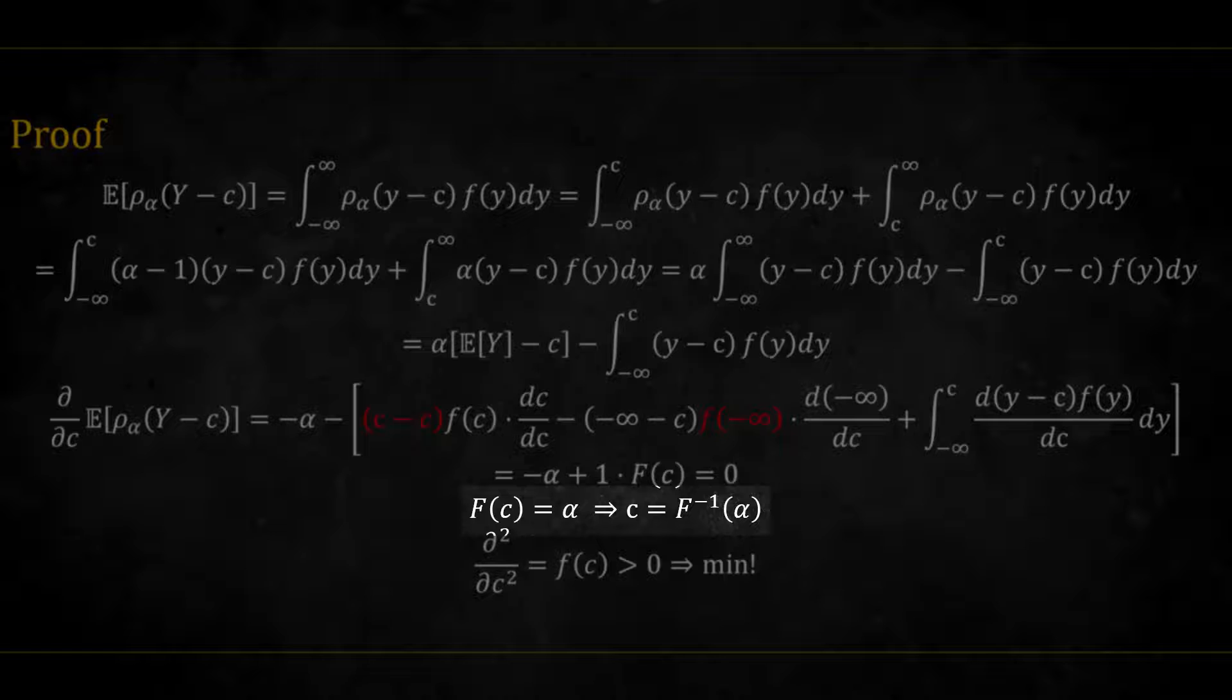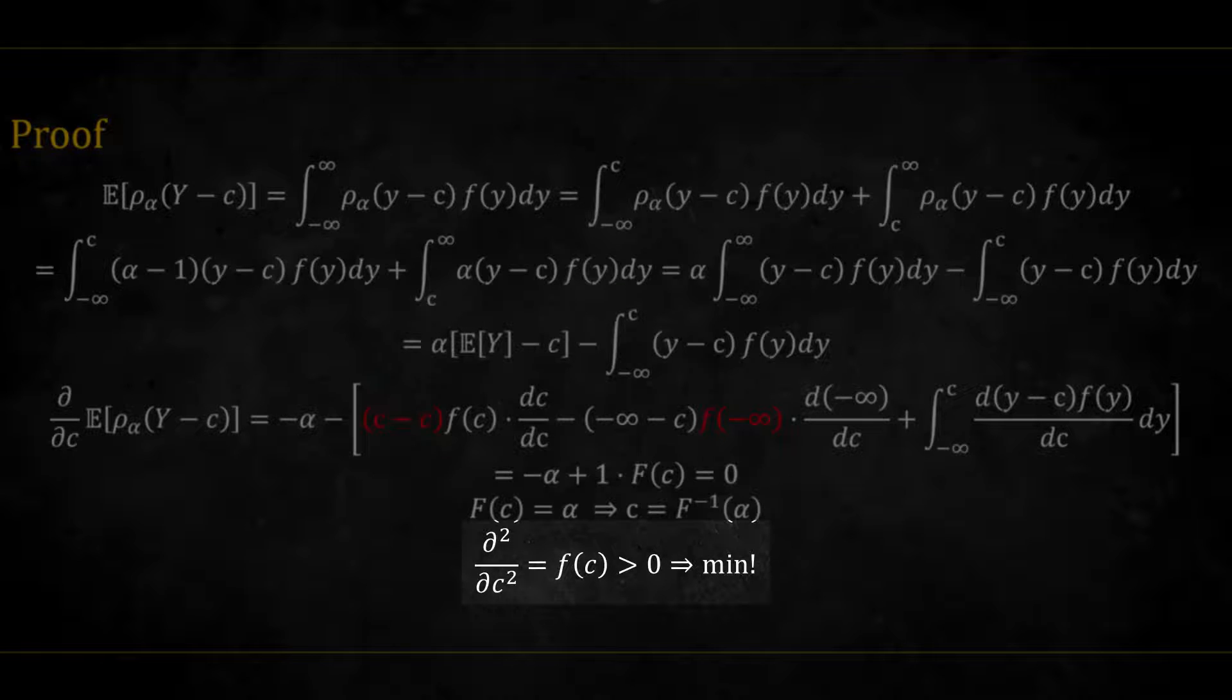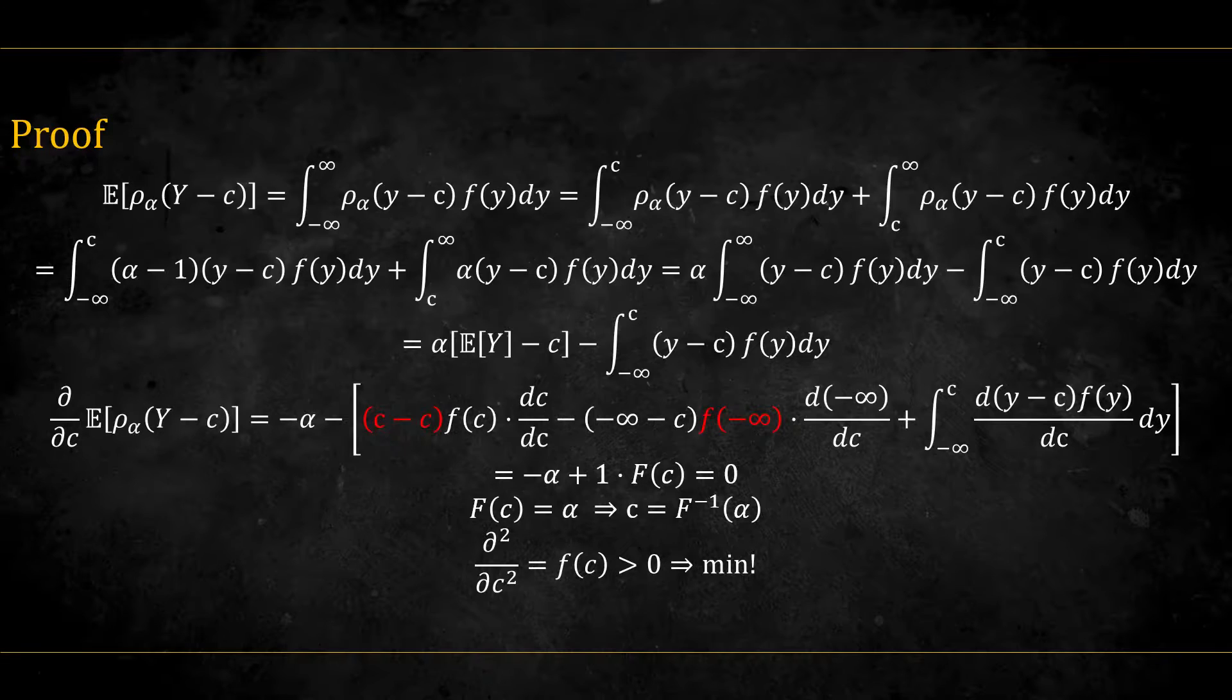We want to find c, and so when taking the inverse function on both sides, we get that c indeed equals the quantile at alpha. Taking the second derivative gives us f(c), which is always positive since pdf must be positive, so it's indeed a minimum point.